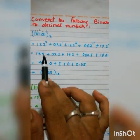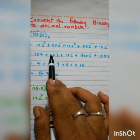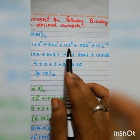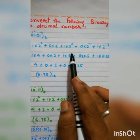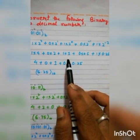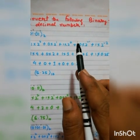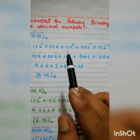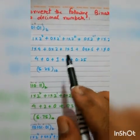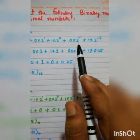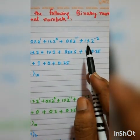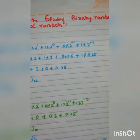So: 1 × 2² = 4. 0 × 2¹ = 0 — remember, any number multiplied by 0 is always 0. 1 × 2⁰ = 1 — remember, any number raised to the power 0 is always 1; for example, 5⁰ = 1, 10⁰ = 1, so 2⁰ = 1. Then 0 × 2⁻¹: 2⁻¹ = 0.5. And 1 × 2⁻² = 0.25.